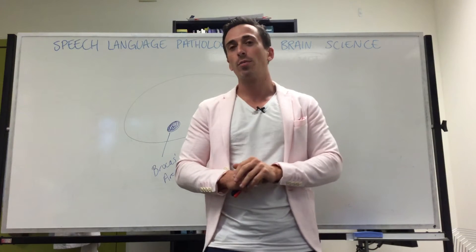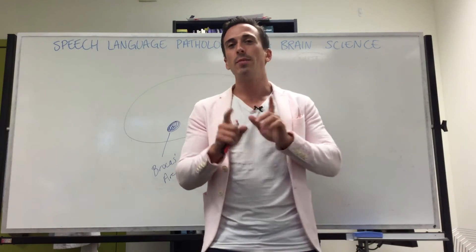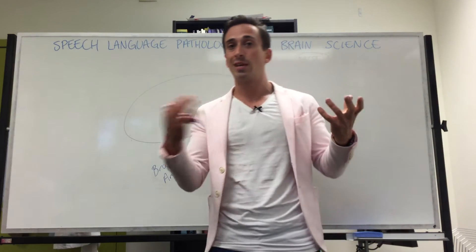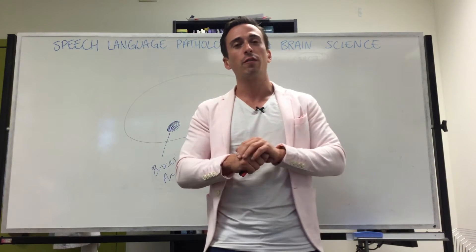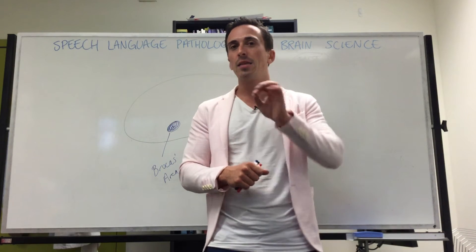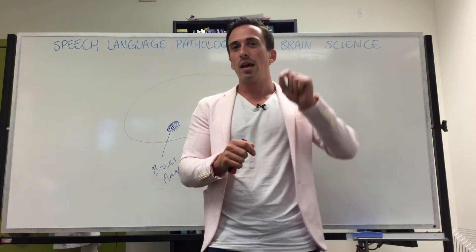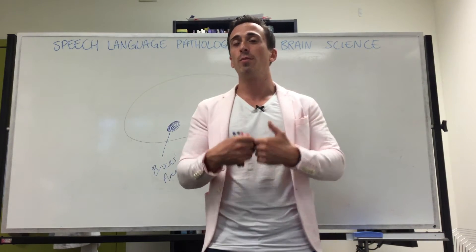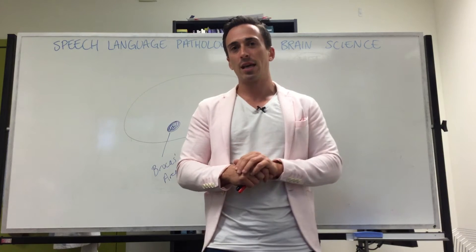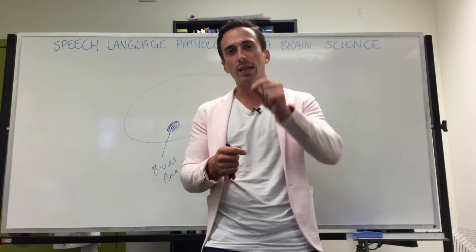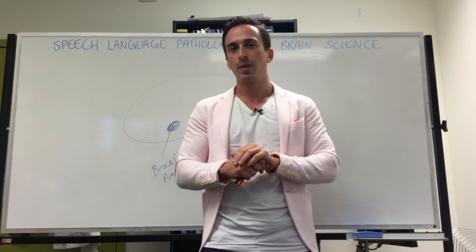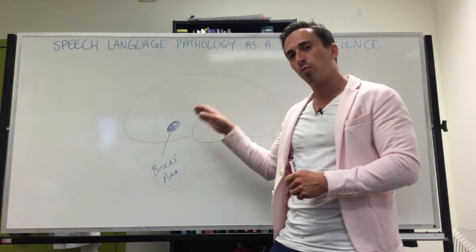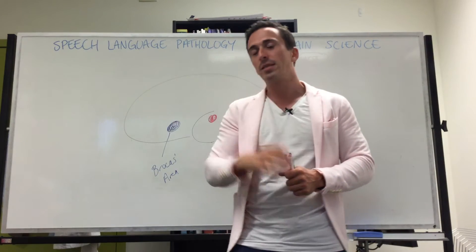He demonstrated that for most humans this language area is localized to the left side of the brain, in the frontal lobe. This is important for a couple of reasons. First, it demonstrated that certain functions of the brain are lateralized — meaning on one side or another. Another key point is that functional behaviors are also localized, meaning a patient presenting with a behavioral pathology can indicate damage or a lesion to a particular localized part of the brain.